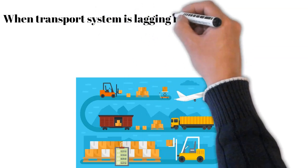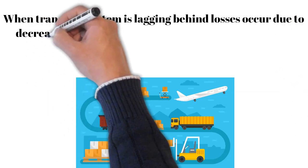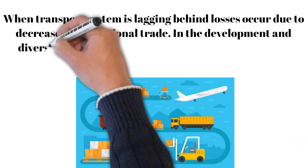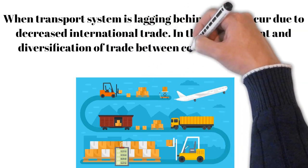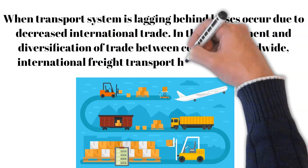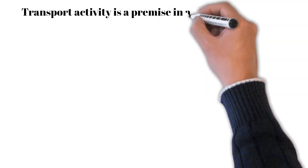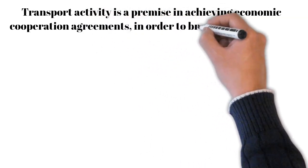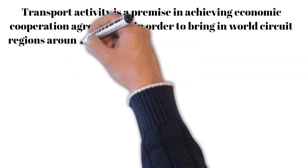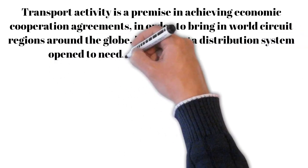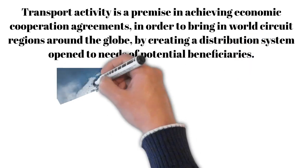When the transportation system is lagging behind, losses occur due to decreased international trade in development and diversification of trade between countries worldwide. International freight transport has an important role. Transport activities are key in achieving economic and operational development in order to bring inward cycles across regions, by creating a distribution system open to the needs of potential beneficiaries.